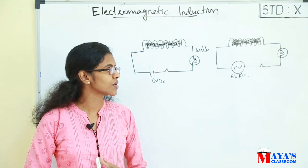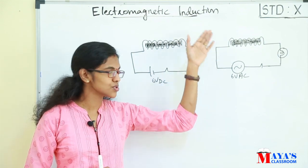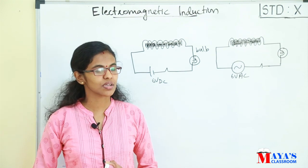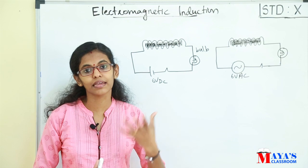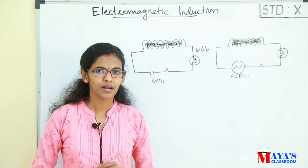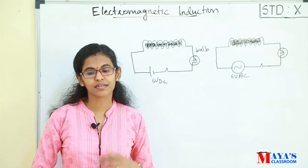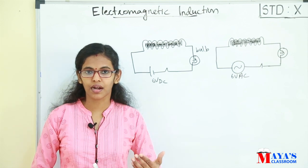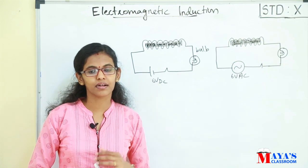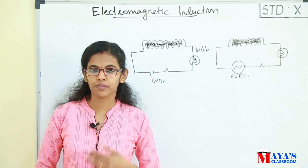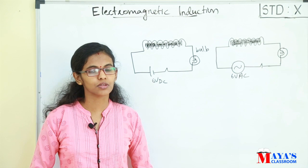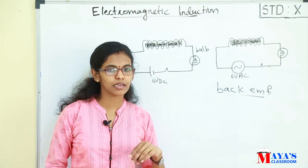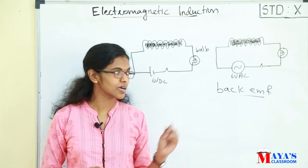When AC is applied to the solenoid, a changing magnetic field is created around it. Due to this, an EMF is induced in the solenoid. The direction of this induced EMF is opposite to the direction of the applied AC. That is why it reduces the effective voltage. This induced EMF is called back EMF, and it reduces the brightness of the bulb.